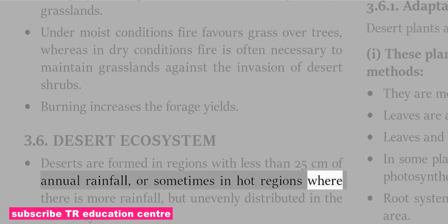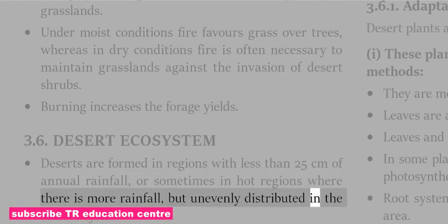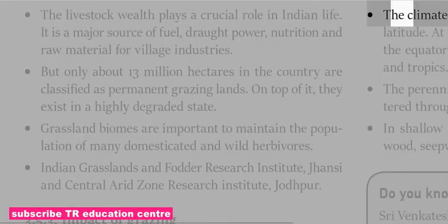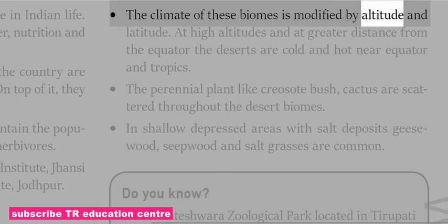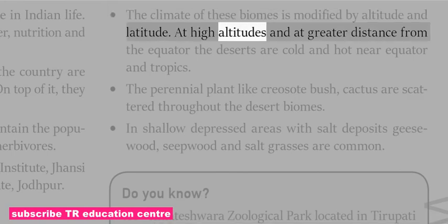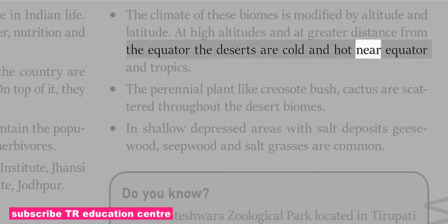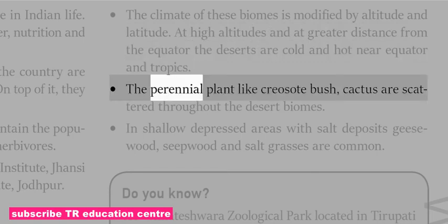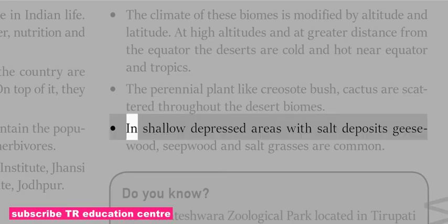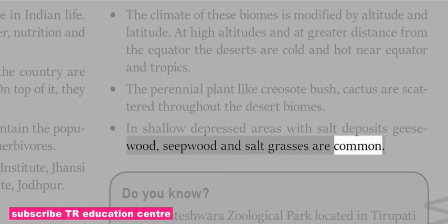Deserts are formed in regions with less than 25 cm of annual rainfall, or sometimes in hot regions where rainfall is more but unevenly distributed. Lack of rain in mid-latitudes is often due to stable high-pressure zones; deserts in temperate regions often lie in rain shadows where high mountains block moisture from the seas. The climate of these biomes is modified by altitude and latitude — at high altitudes and greater distance from the equator, deserts are cold; near the equator and tropics they are hot. Perennial plants like creosote bush and cactus are scattered throughout desert biomes; in shallow depressed areas with salt deposits, greasewood, seepwood and salt grasses are common.